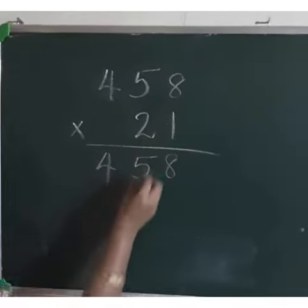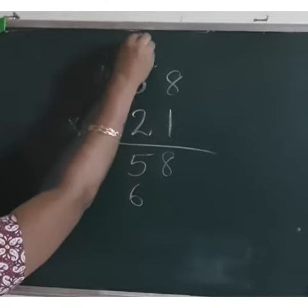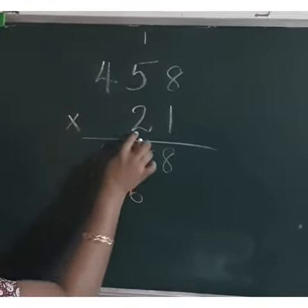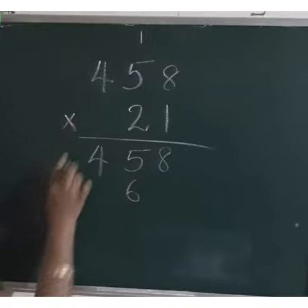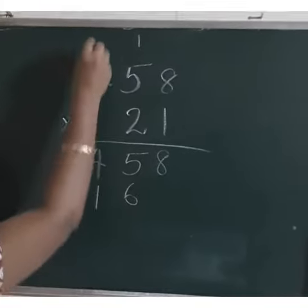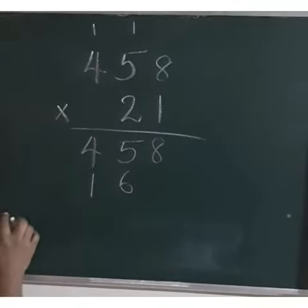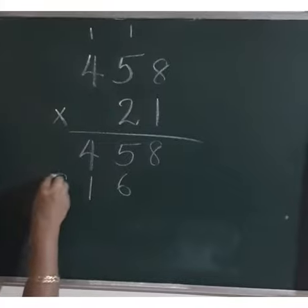2-8s are 16. So, we have to write 6 here and carry over 1. And 2-5s are 10. 10 plus 1 is 11. We have to write 1 here and carry over 1. And we know that 2-4s are 8 and 8 plus 1 is 9.